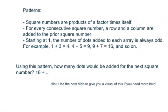So here's some patterns that I noticed. Square numbers are products of a factor times itself. One times one. Two times two, right? For every consecutive square number, a row and a column are added to the prior square number. I'm going to show you a visual of that in a second. And then starting at one, the number of dots added to each array is always odd. For example, if I do one plus three, three is an odd number, I get the array of four.